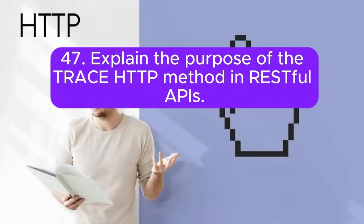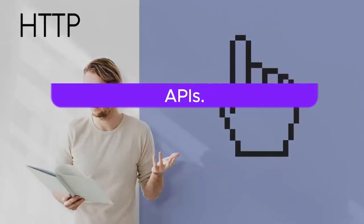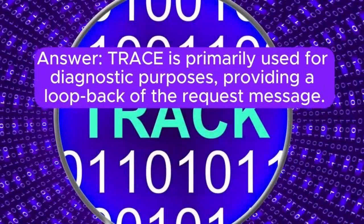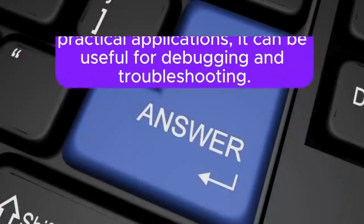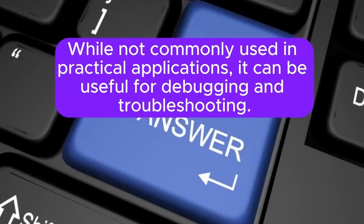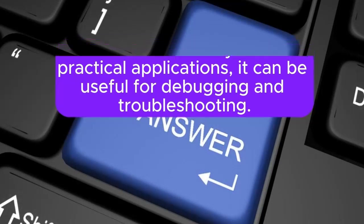Question 47: Explain the purpose of the TRACE HTTP method in RESTful APIs. TRACE is primarily used for diagnostic purposes, providing a loopback of the request message. While not commonly used in practical applications, it can be useful for debugging and troubleshooting.